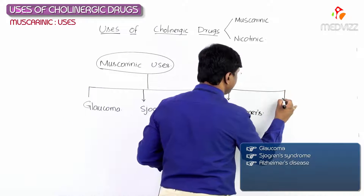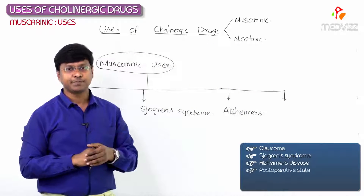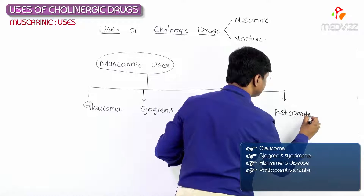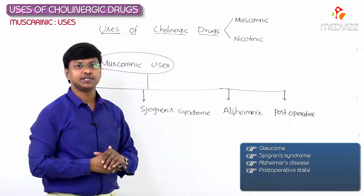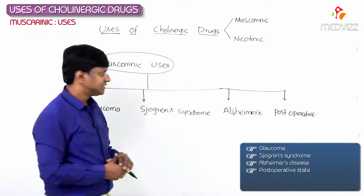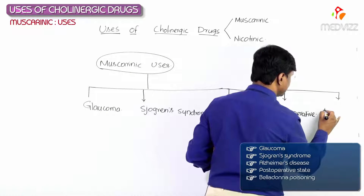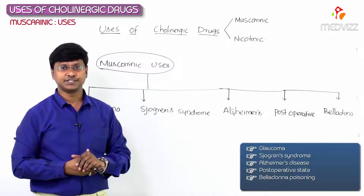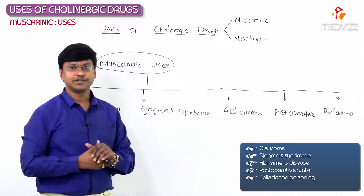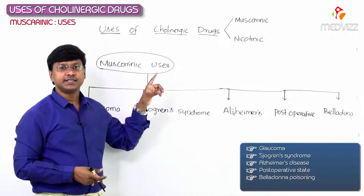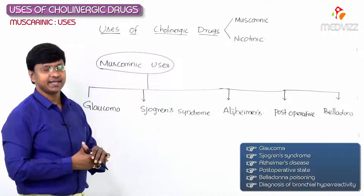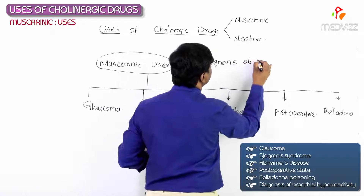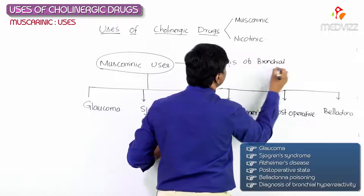Next, because of their muscarinic action these drugs are used in the post-operative state. They are also used in the treatment of belladonna poisoning. Apart from that, these drugs are useful for the diagnosis of bronchial hyperreactivity via their muscarinic action.